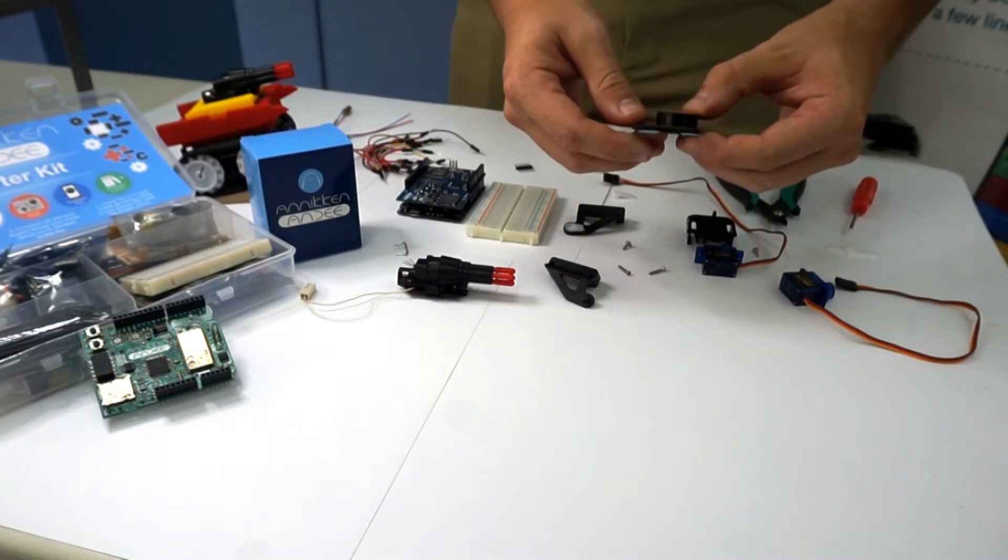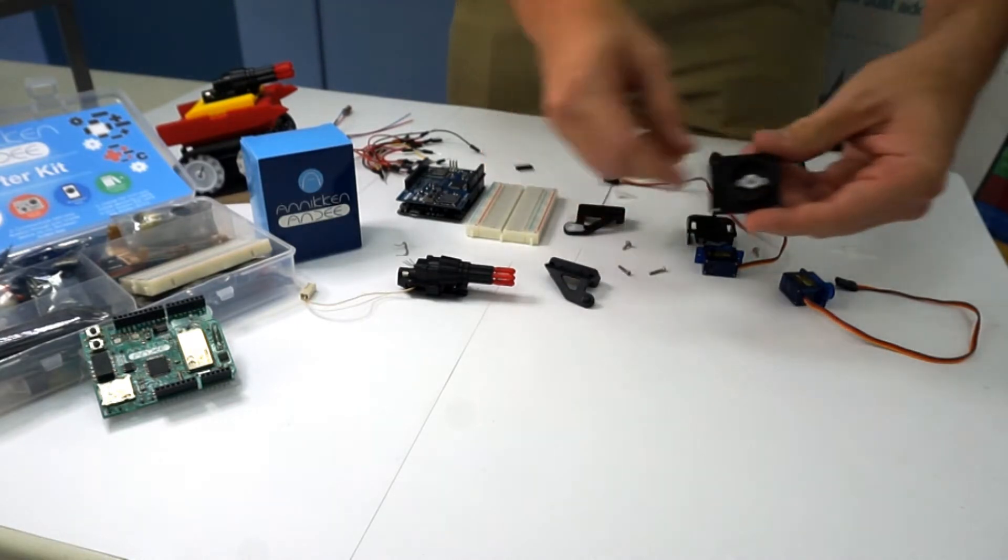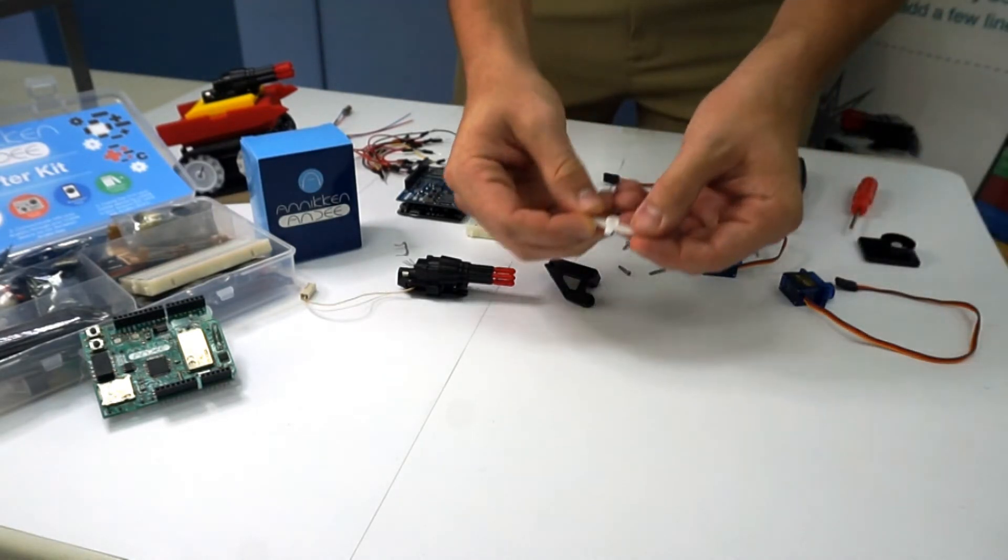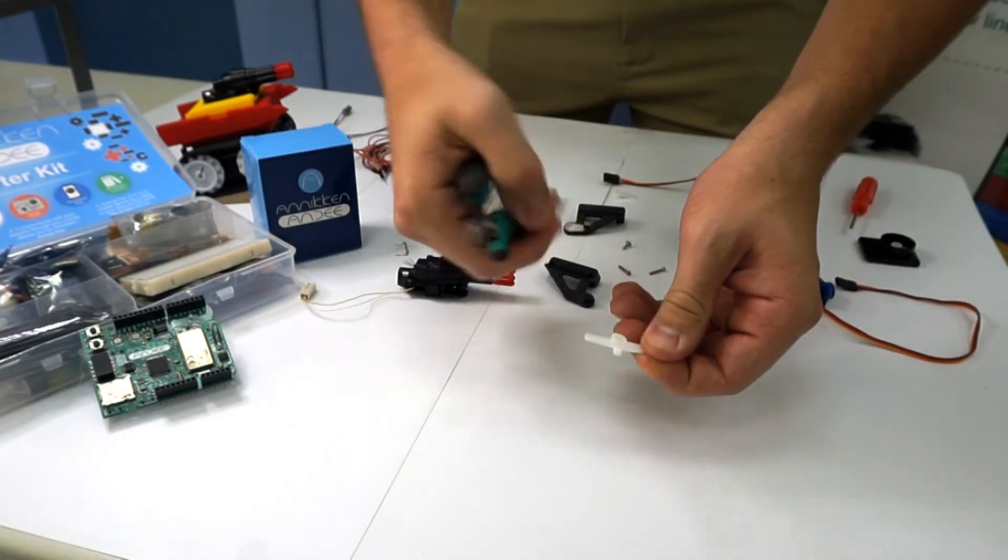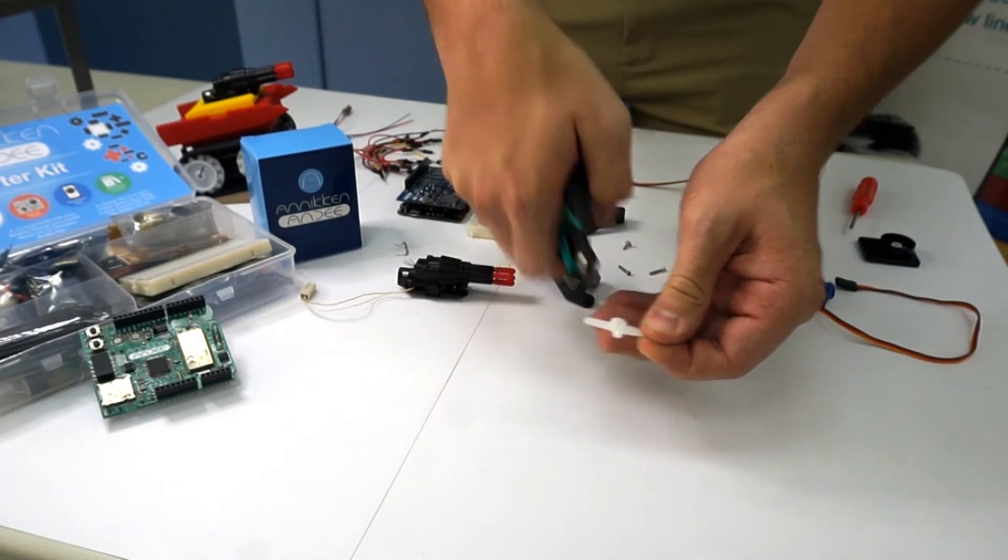The first step is to make the base. So here we have the base and you'll find when you get one of these arms. And what you want to do is you want to take wire cutters or scissors and cut these pieces off.